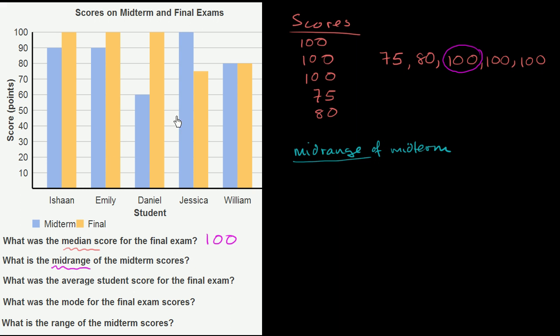The highest midterm score, looking at the blue bars, is Jessica's 100. The lowest score is Daniel's 60. The midrange is the arithmetic mean of these two numbers. So you add 100 plus 60, divide by 2, and get 160 over 2, which equals 80.